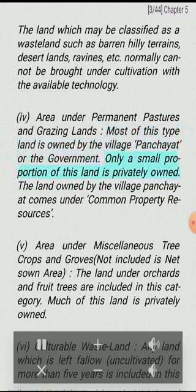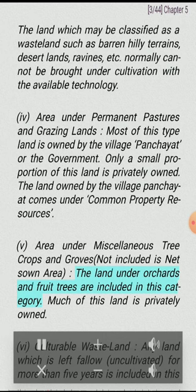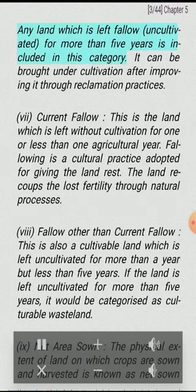IV. Area under permanent pastures and grazing lands. Most of this type of land is owned by the village panchayat or the government. Only a small proportion of this land is privately owned. The land owned by the village panchayat comes under common property resources. V. Area under miscellaneous tree crops and groves, not included as net sown area. The land under orchards and fruit trees is included in this category. Much of this land is privately owned.